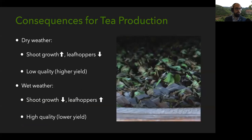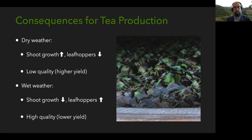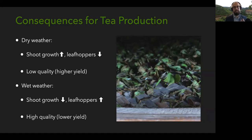In dry weather, we saw faster shoot growth but lower leafhopper density — this might equate to a lower-quality tea situation where commodity tea production is more appropriate. Wet weather resulted in lower shoot growth and higher leafhopper density, which might result in more high-quality specialty tea. So it could be beneficial for farmers to adapt and switch their production styles depending on the weather. One twist: if weather becomes more variable, we could get combinations of both high shoot growth and high leafhopper density, making it difficult to predict. Also, higher leafhopper density doesn't necessarily mean more damage.